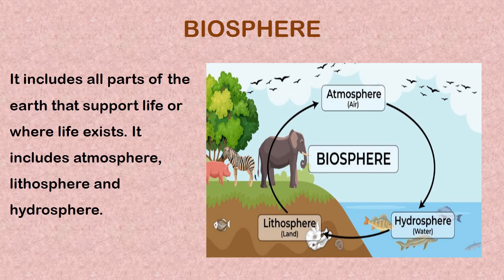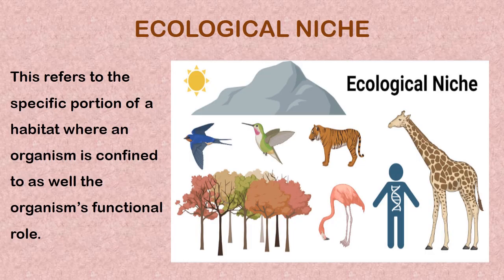Moving along, we have the ecological niche. The ecological niche refers to the specific portion of the habitat where an organism is confined to, as well as the organism's functional role. For instance, grasses are found on land, birds on trees, and giraffes on land. The function of trees is to provide food for herbivores — serving as producers — while the animals found in the habitats, including man, serve as consumers. Each organism plays a role and carries a specific function in the habitat.